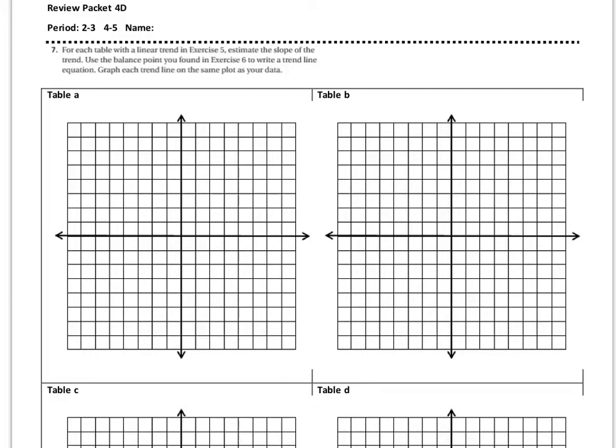So what you can do is you can first plot the balance point, which is x bar, y bar. So that you can use this as an equation: y minus y bar equals m times x minus x bar. Whatever the value you get here, you can plug in there. So all we have to do to write an equation is to find a slope.